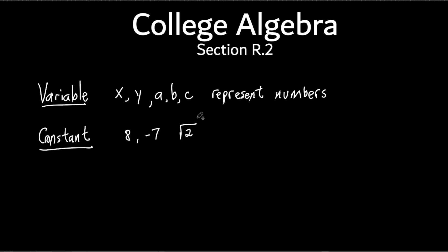A student asks: the square root of 2 — would you consider that a constant, even though it keeps going? Yeah, it's an irrational number. So even though it keeps going on and on, it's still just a regular number. If you put it in your calculator, it'll take up all the space because it keeps going forever and ever. It doesn't repeat — it just looks like random numbers keep going.